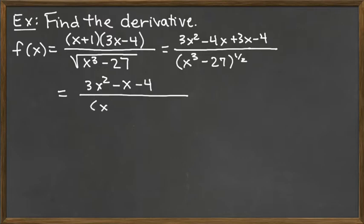All of that would be over the x cubed minus 27 raised to the one half power. And so now we've made a little bit of progress by eliminating the product rule required. But here we would still be stuck with the quotient with chain.